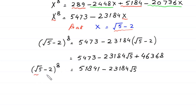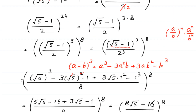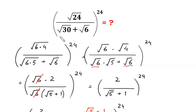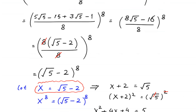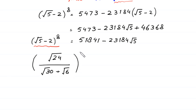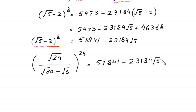Because (square root of 5 minus 2) to the power 8 is the simplified form of the original expression, square root of 24 divided by (square root of 30 plus square root of 6) whole to the power 24 equals 51841 minus 23184 times square root of 5. This is the final answer.